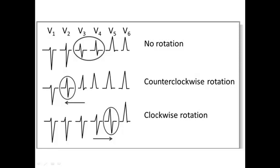Sometimes we find these two terminologies in MCQ questions, so we need to be familiar with them, although we usually use the terms poor R-wave progression, delayed transition zone, or early transition zone.